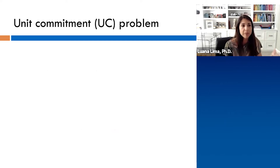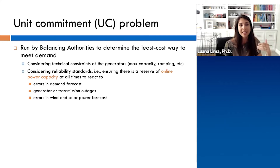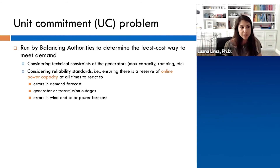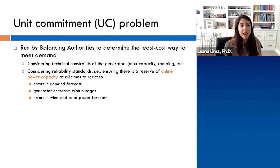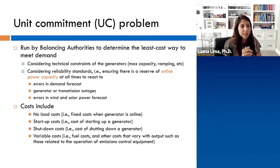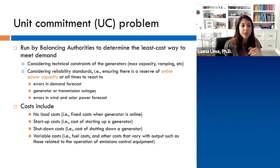The main optimization model run by vertically integrated utilities and ISOs is called unit commitment. It determines the least-cost way to meet demand. It accounts for the technical constraints of generators — like maximum capacity and ramping up and down — and reliability standards, meaning we need online capacity or reserves to account for errors in demand forecasts, generation and transmission outages, and errors in wind and solar power forecasts. Costs include no-load costs (the fixed costs to keep a generator online), startup and shutdown costs, and variable costs such as fuel costs for thermal plants.